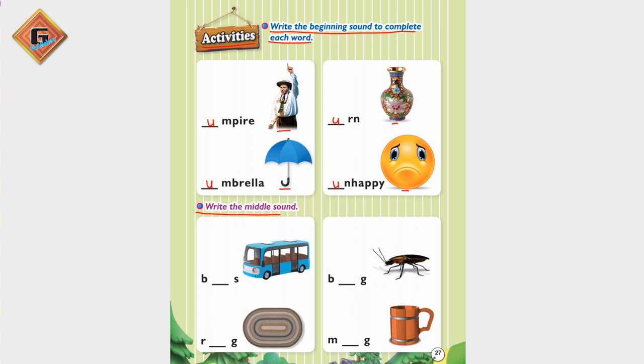In pictures you will write the middle sound. The first picture is bus. You can see B dash S. Now think which sound will come in the middle. What can the middle sound be? Bus. Very nice. It's B U S, bus. So here we will write U.